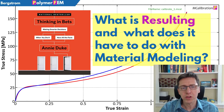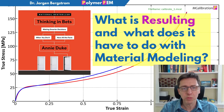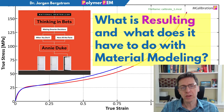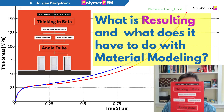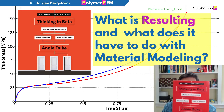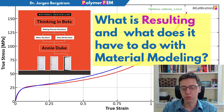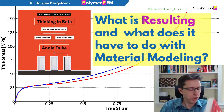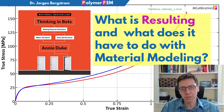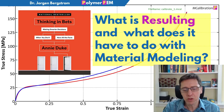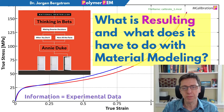In this video I'm going to talk about the concept called Resulting. This is a phenomenon that is described very well in the book called 'Thinking in Bets,' written by Annie Duke. If you haven't read this book, I recommend it. It's a good book — it talks about how you can make decisions when you don't have all the information.